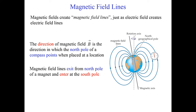One thing worth mentioning: the north pole of a compass points toward the north pole of Earth, which means the north geographic pole of the Earth is actually the south magnetic pole, and the south geographic pole is the north magnetic pole of the Earth. This should bother you a bit — either the north end of a magnet needs to be the south magnetic pole, or the north geographic pole needs to be the south magnetic pole. It's the second one: the north geographic pole is actually the south magnetic pole.